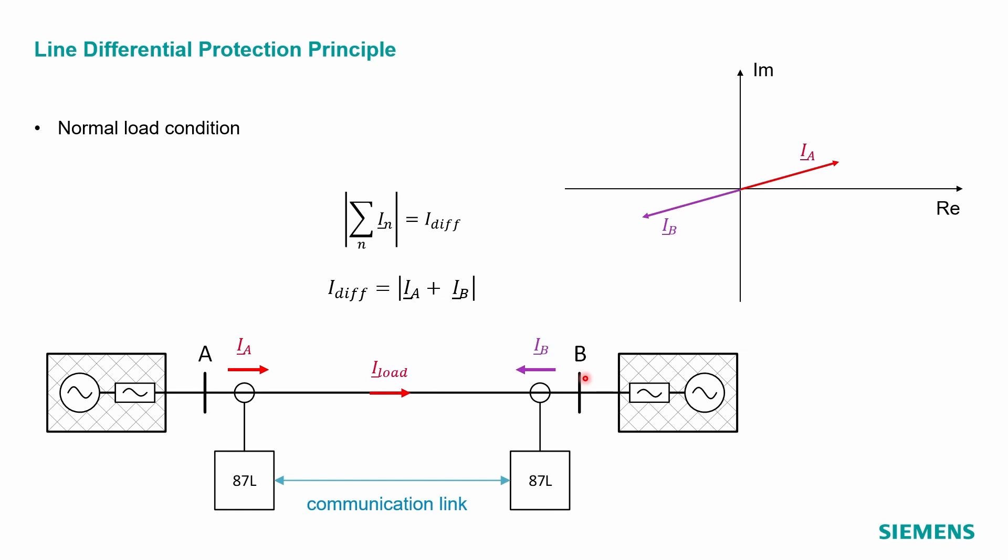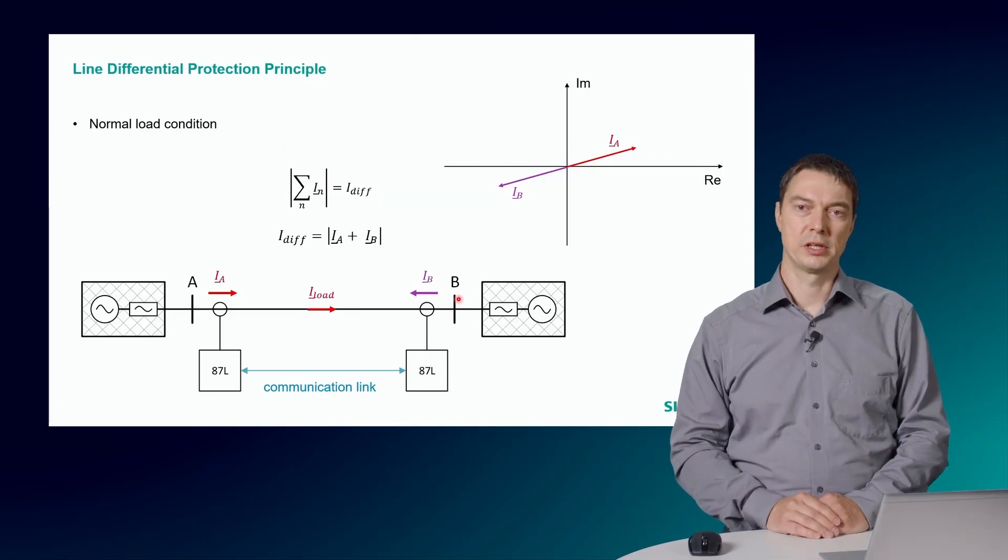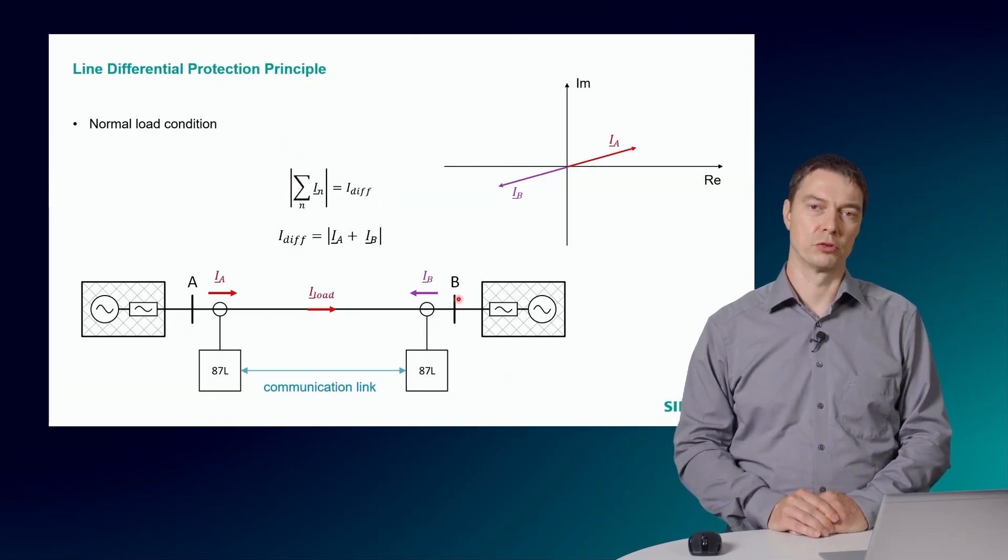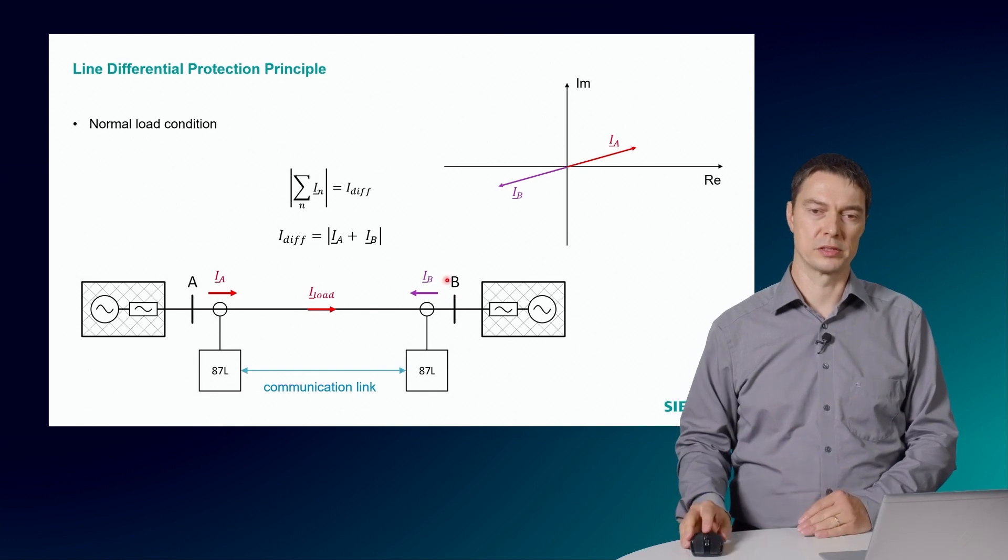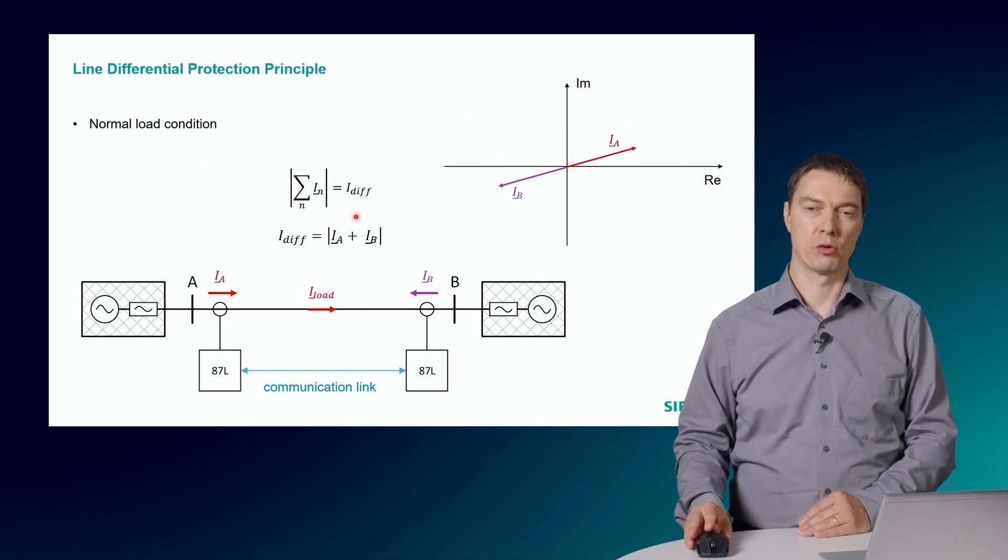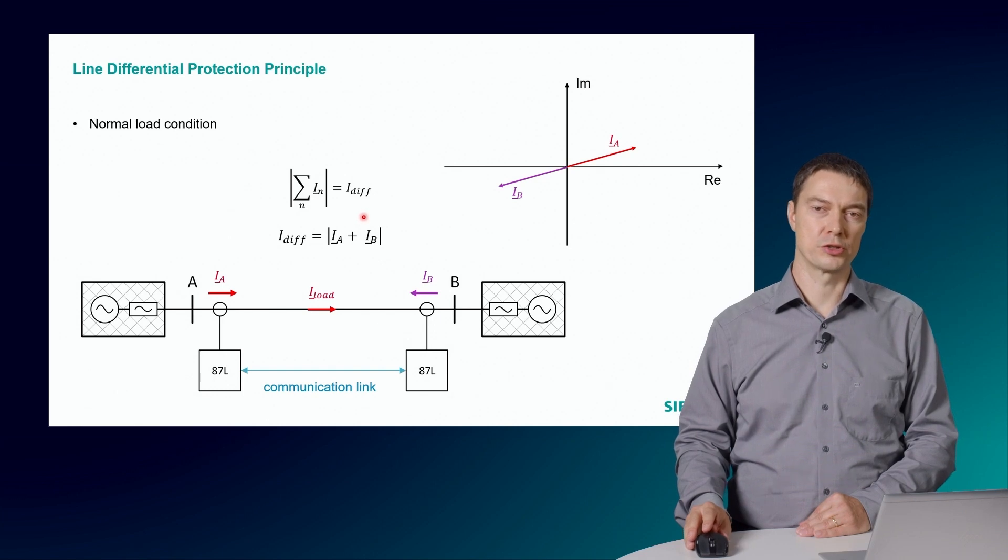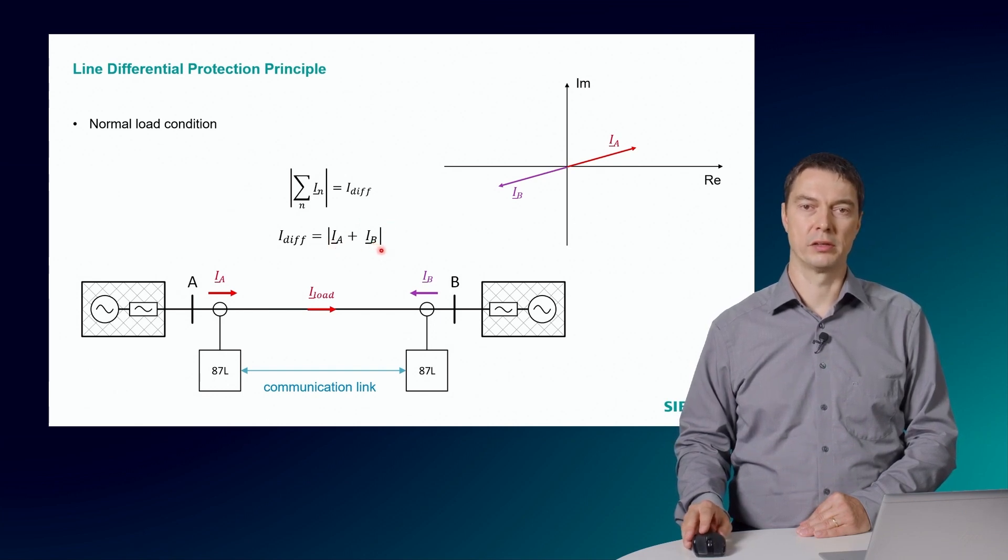The current phasor is therefore in the opposite direction. Most relays in the market will calculate the differential current as the sum of the current phasors from N terminals. For our two ended application, the differential current is therefore IA plus IB and then the absolute value.